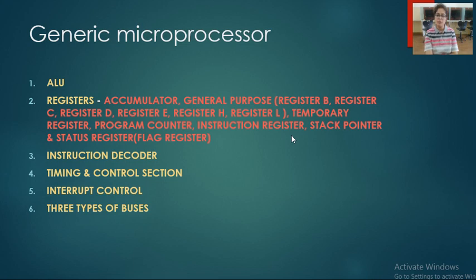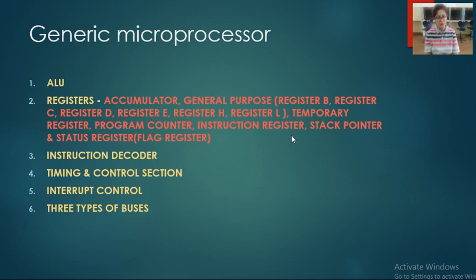Next is stack pointer. Stack pointer means the register is in the form of a stack, stores data in the form of a stack, and makes use of pointers. The last register is status register — also known as flag register. It is used to indicate the status of different flags in the microprocessor, indicating whether a flag is active or not.